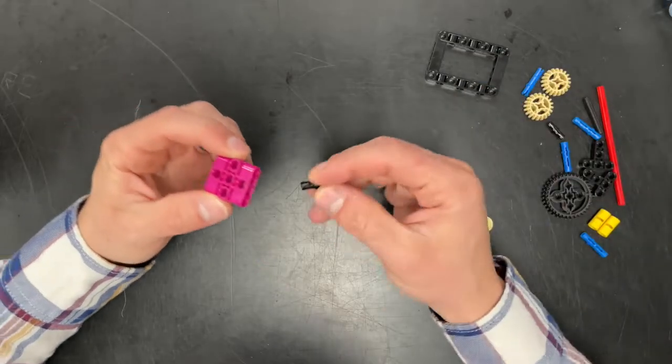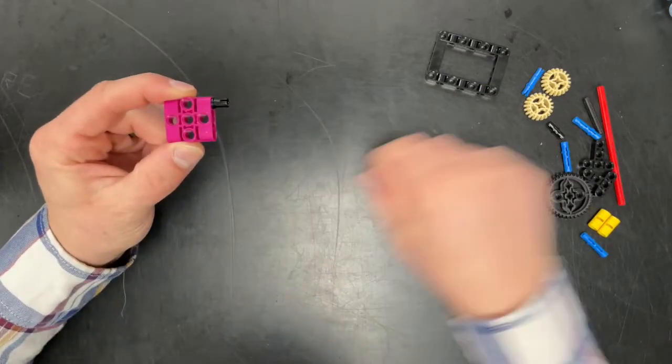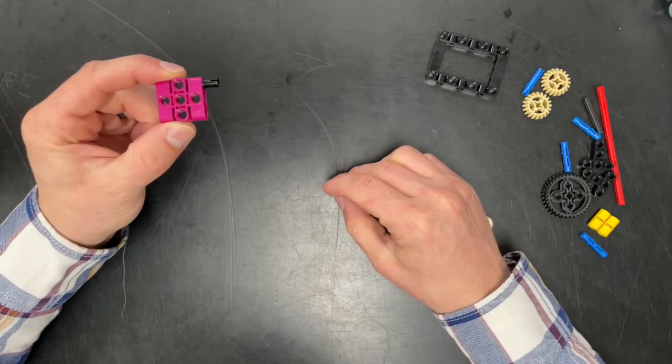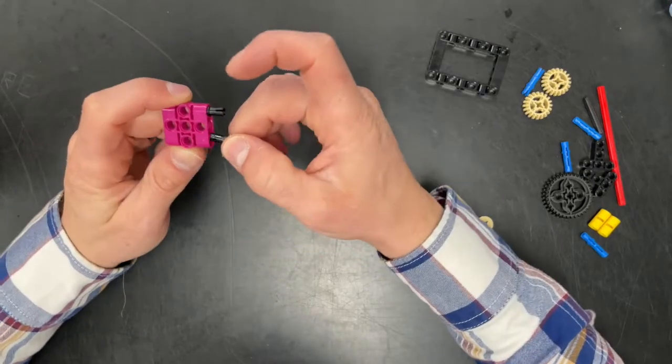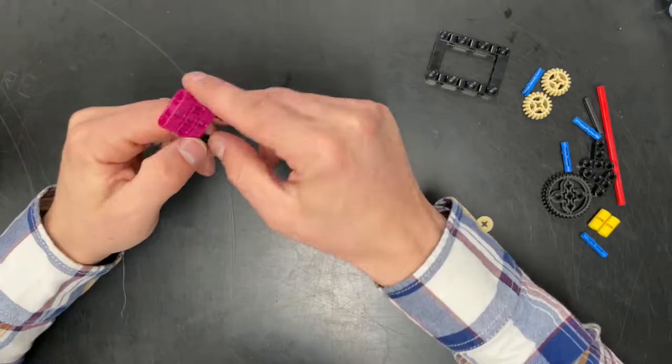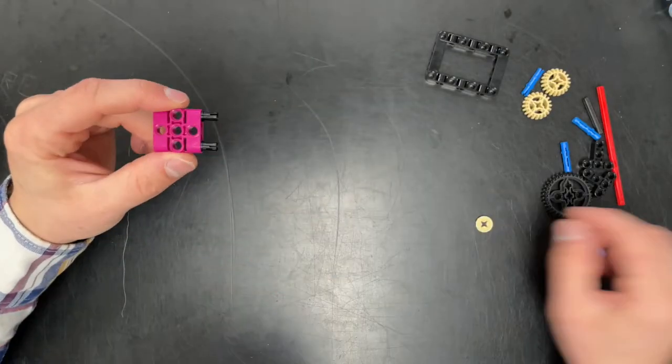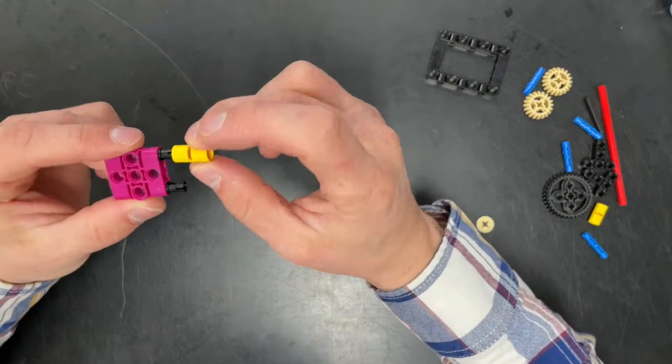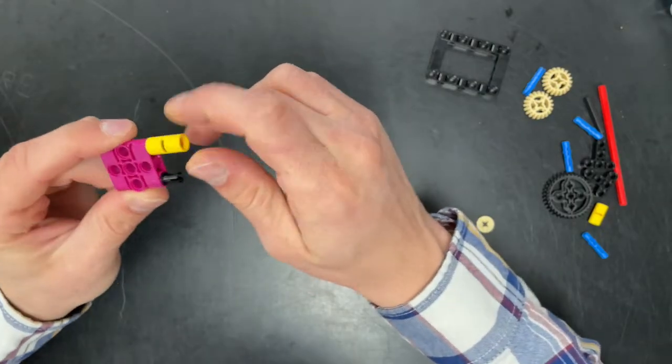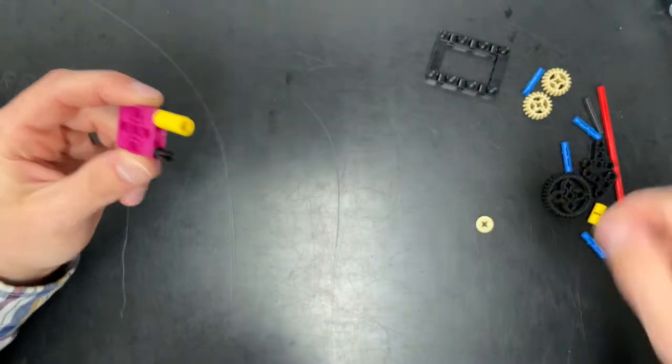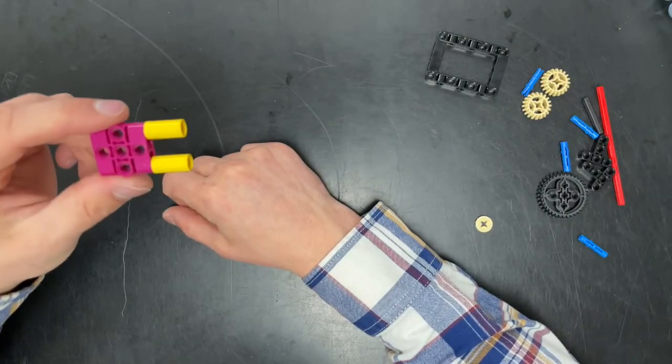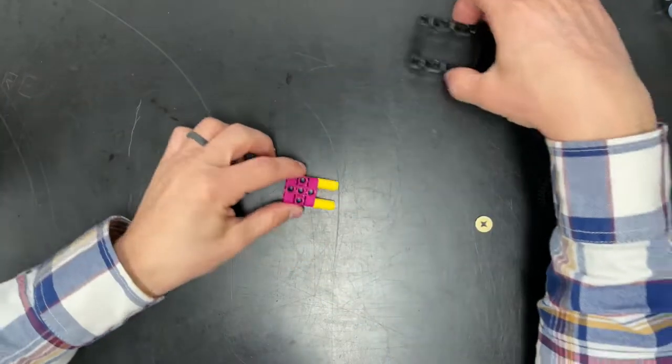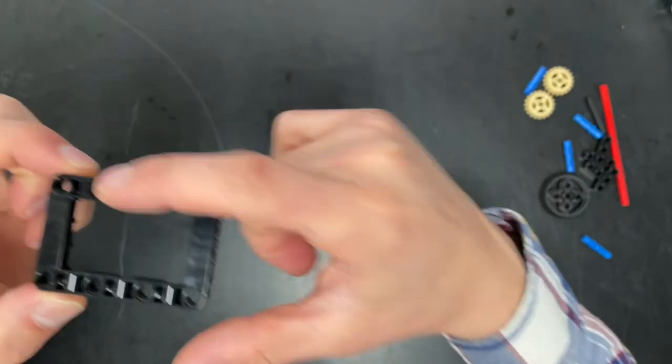I'm going to start with this pink three by three plate or purple three by whatever color this is, three by three plate. And I'm going to stick some black pegs in the side. Ultimately right now it doesn't matter what side. And then I'm going to take these yellow axle cover thingies. I don't know what they are, but I'm going to take those and I'm going to put them on the black peg like that.